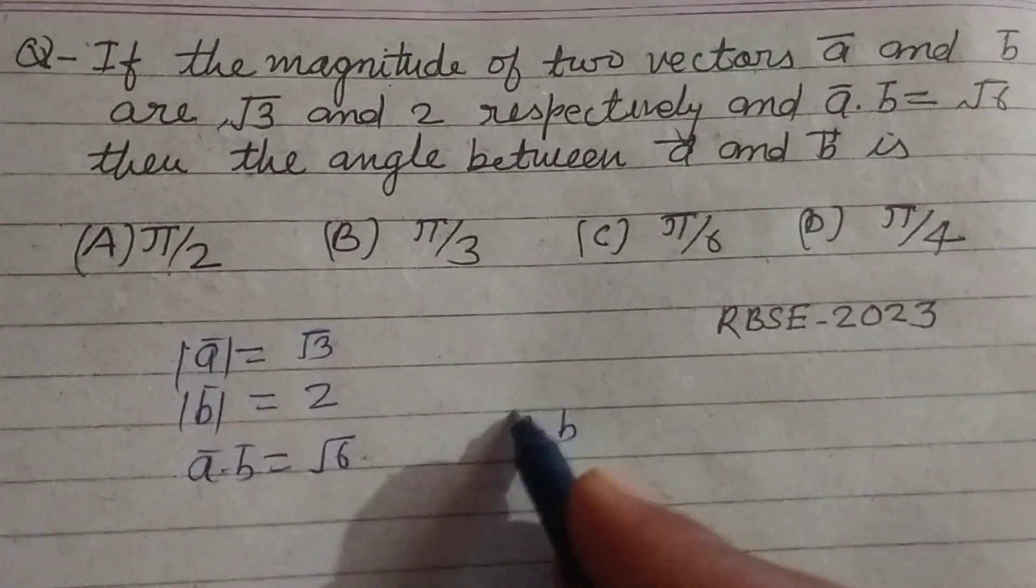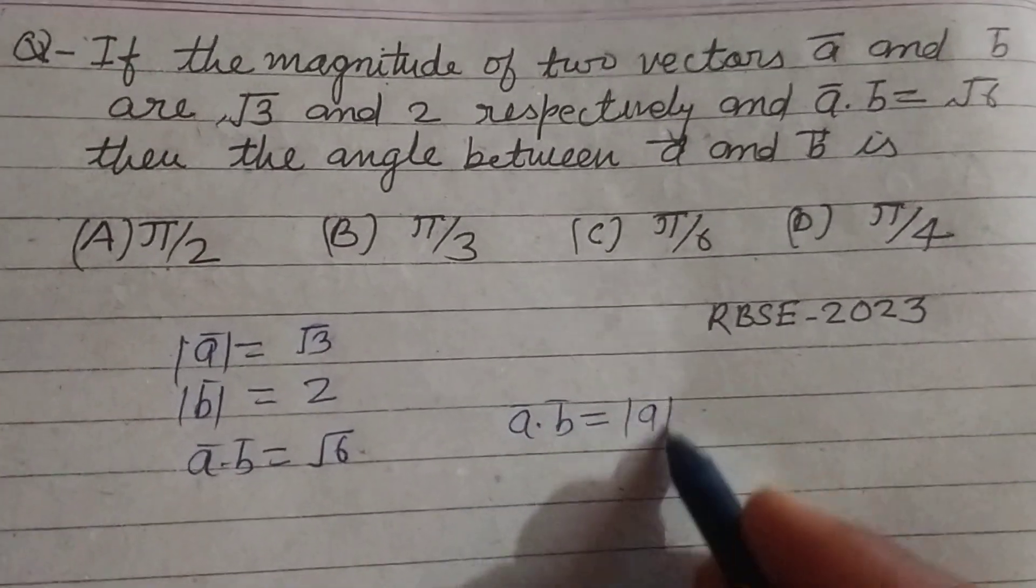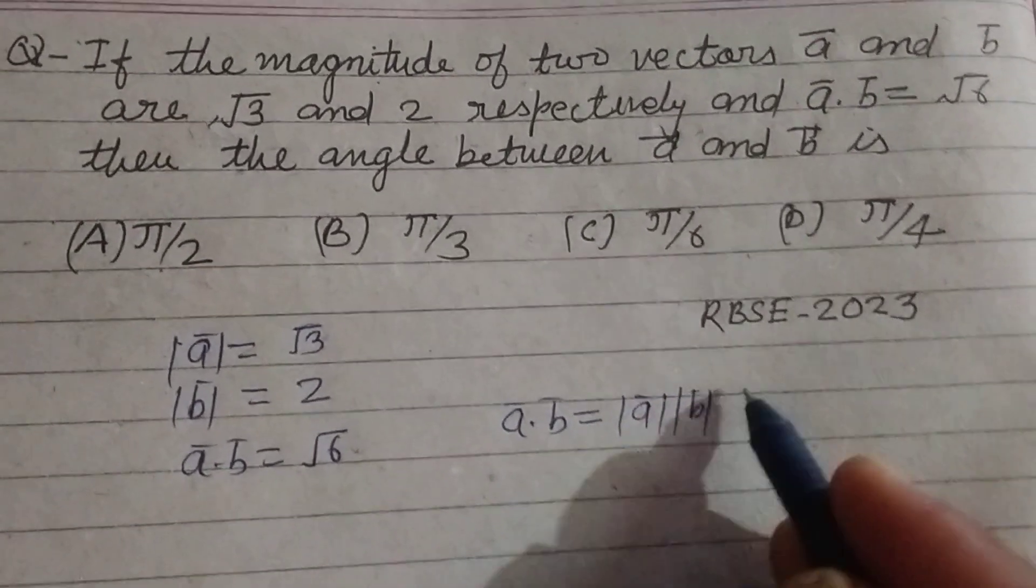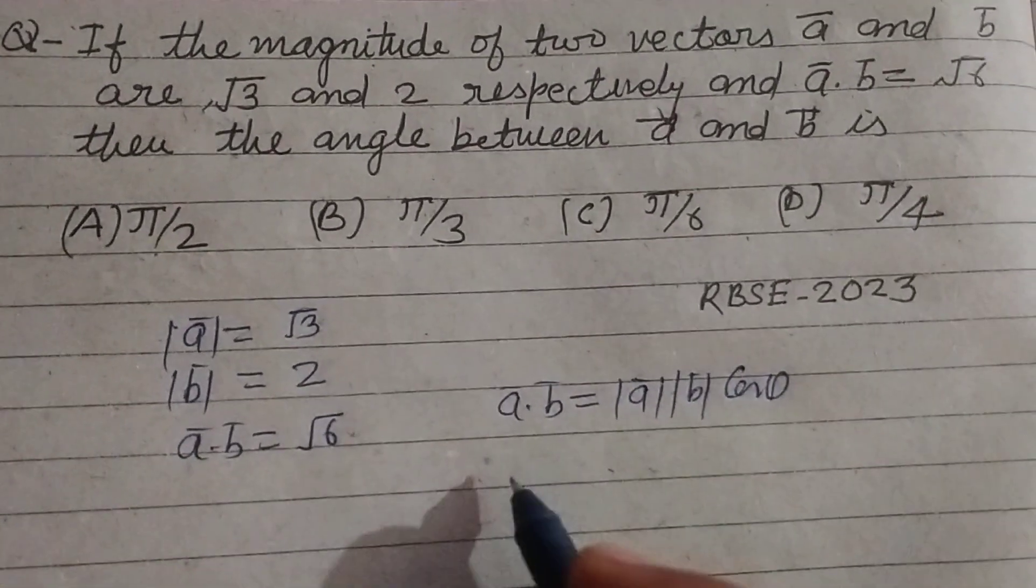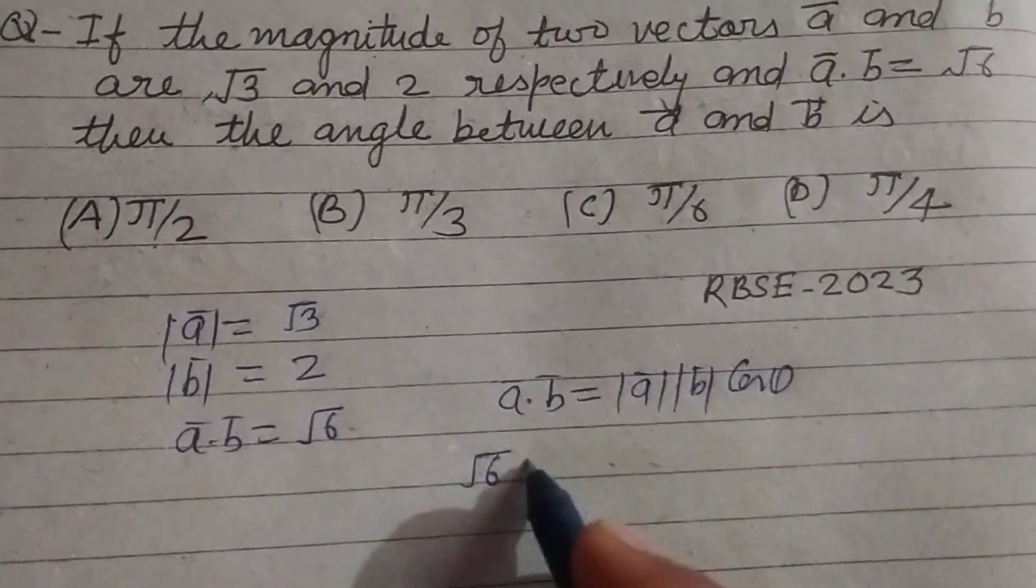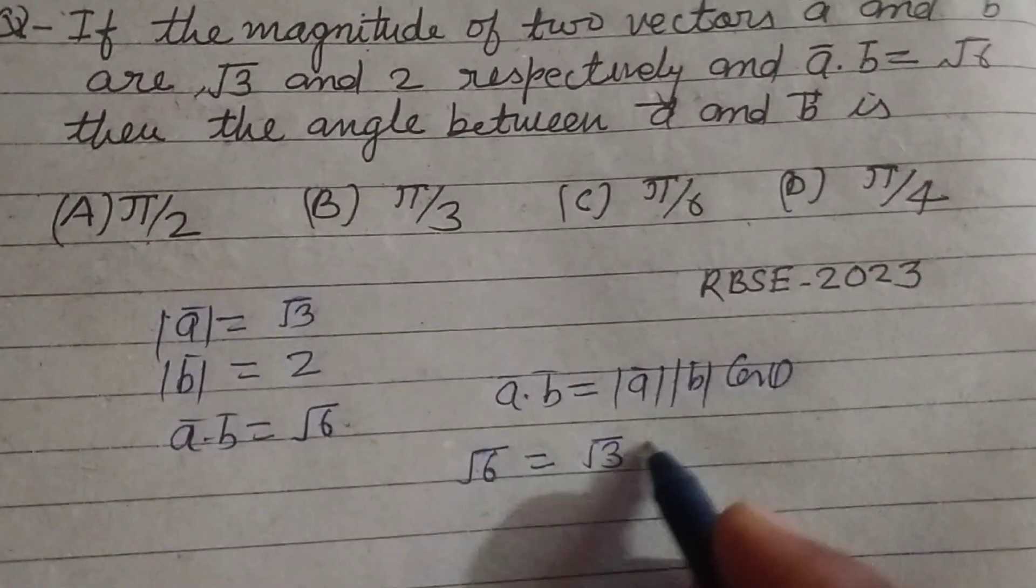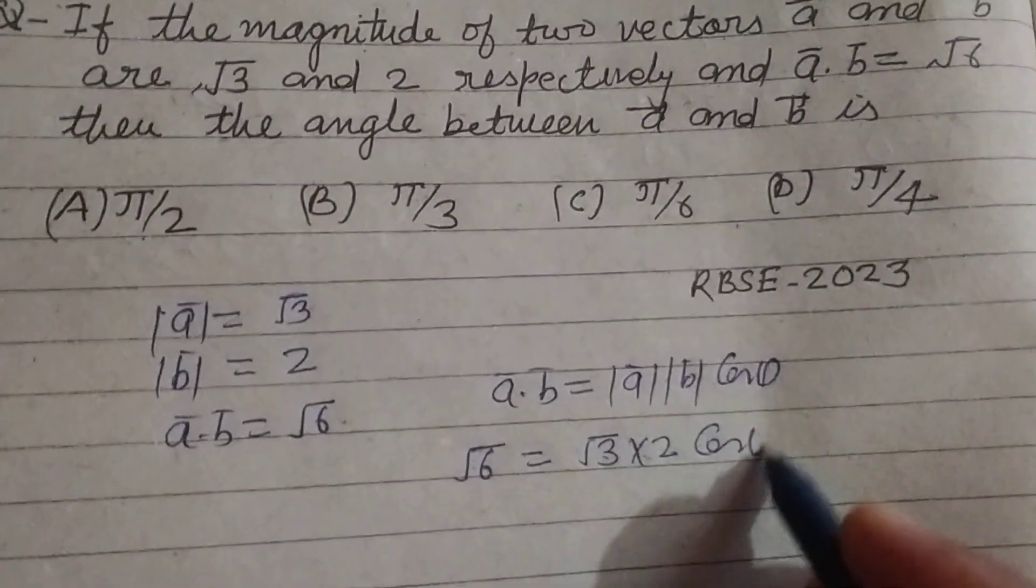Therefore A dot B equal to mod of A, mod of B cos theta. Putting the values, √6 equal to √3 into 2 cos theta.